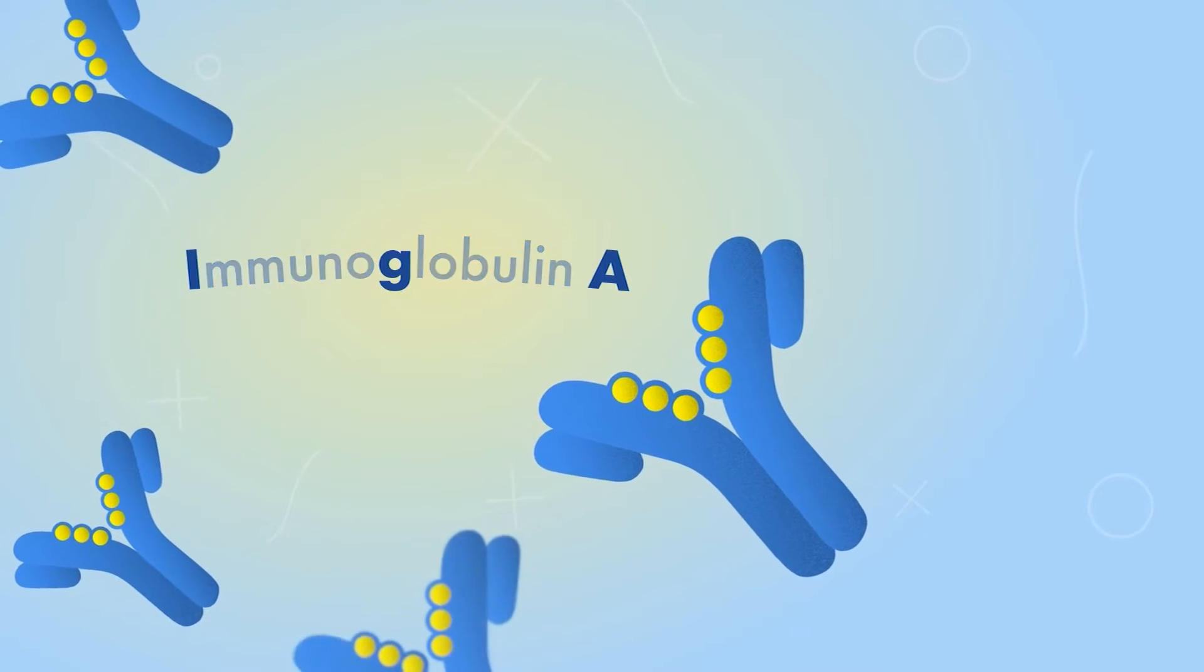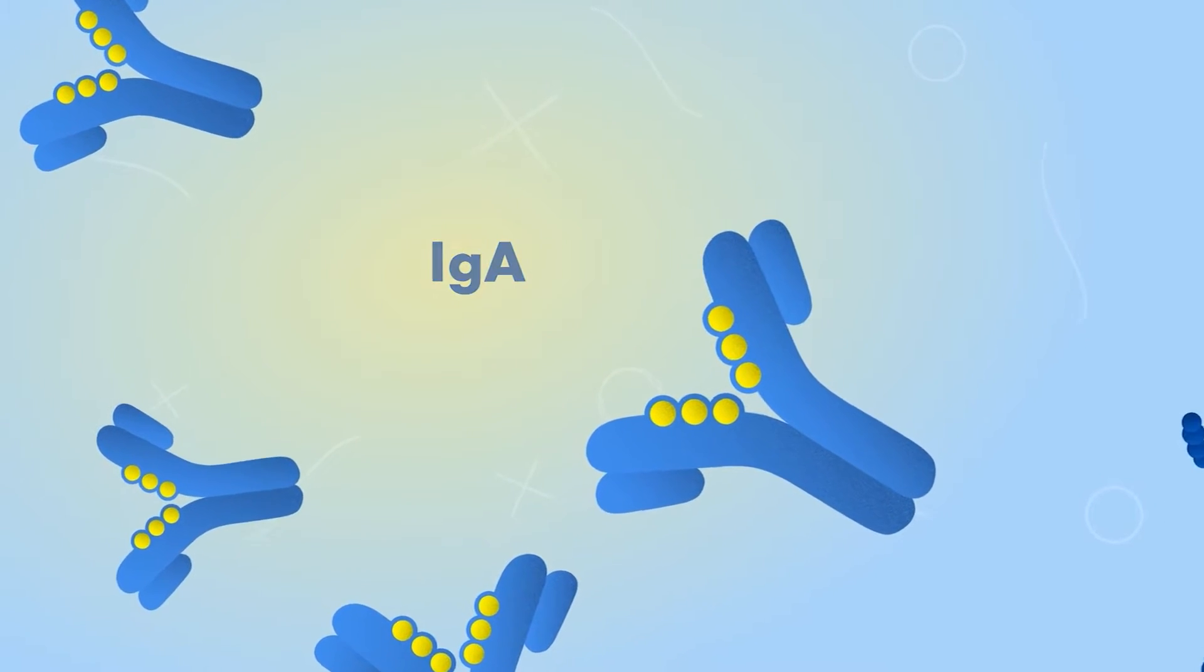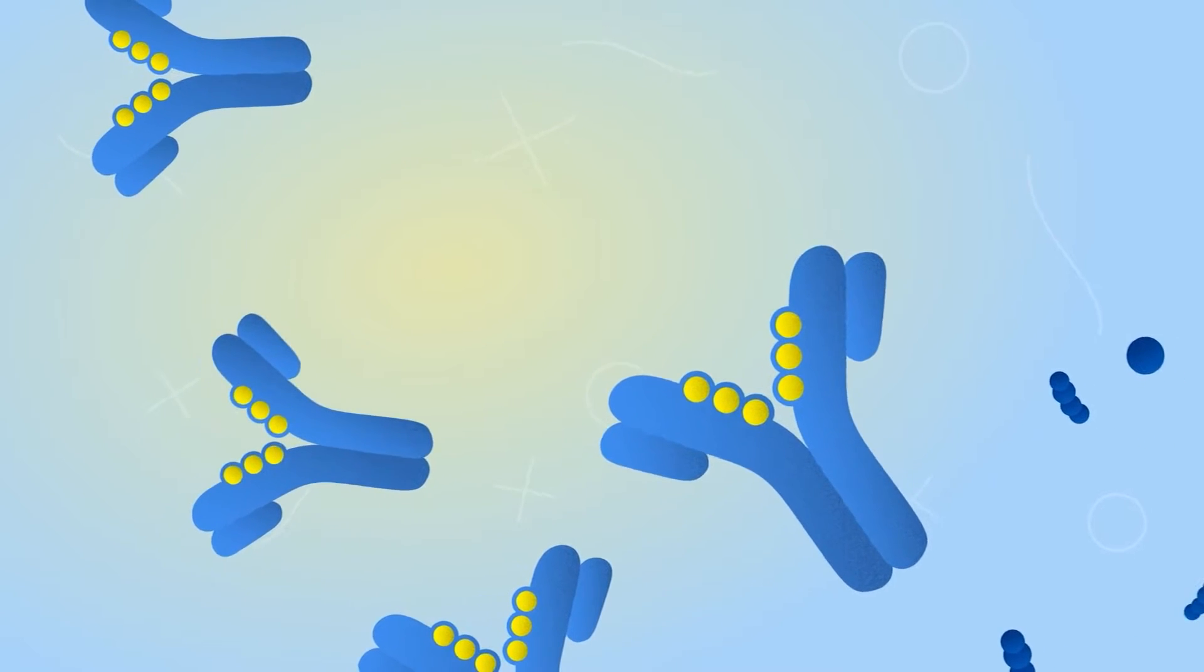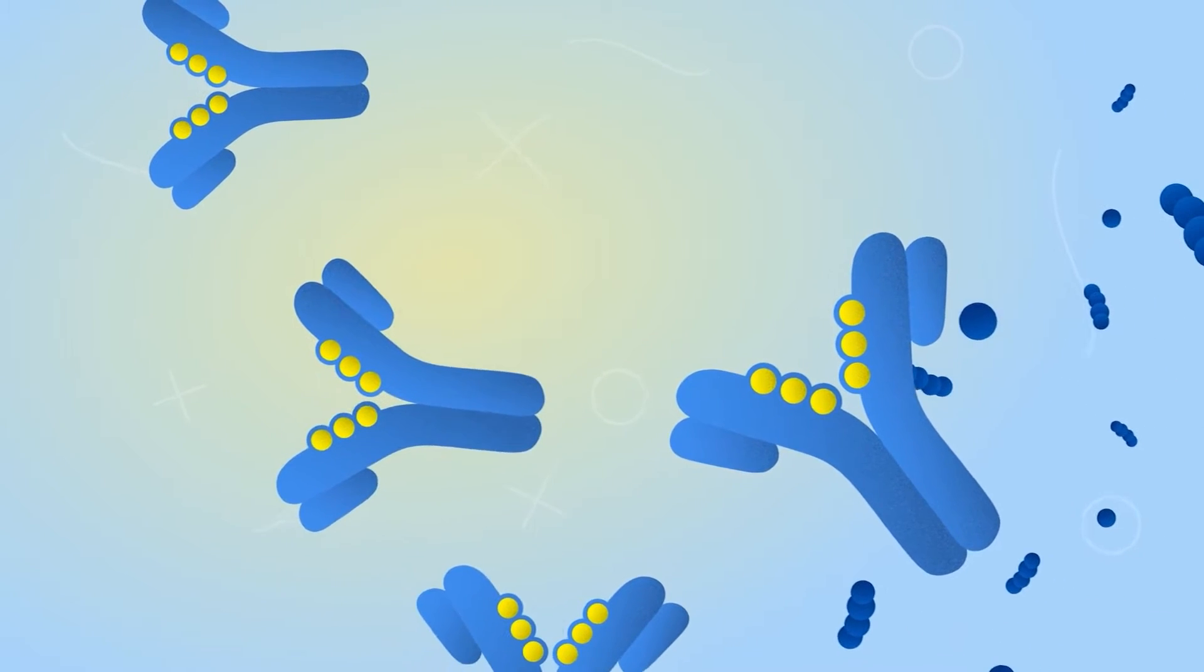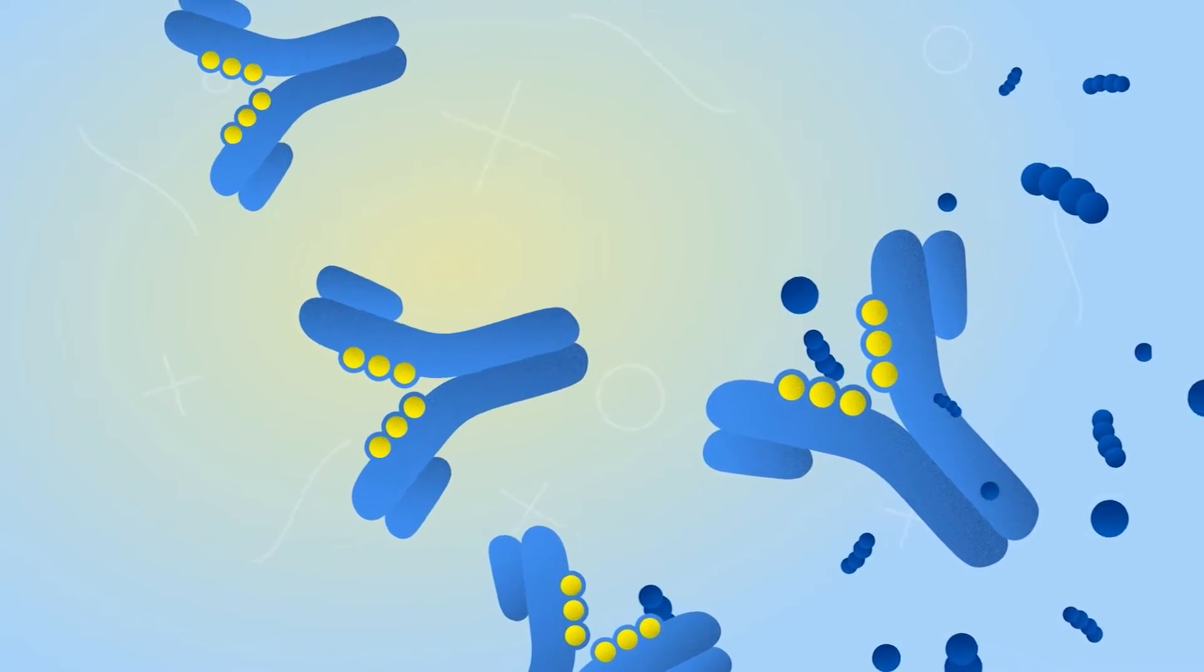Immunoglobulin A, or IgA, is a type of antibody. Normally, IgA helps detect and protect against foreign invaders in the respiratory and gastrointestinal tracts.